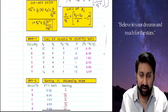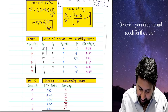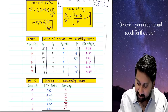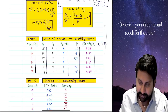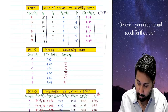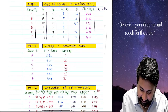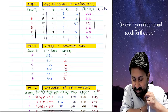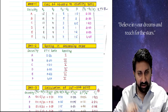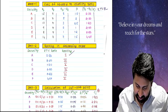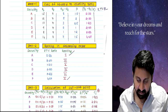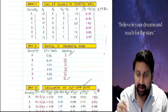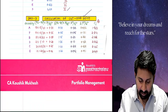Six securities are given with their returns and RF. You calculate the reward-to-volatility ratio as (Rs − Rf) / β. Arrange them in descending order — say A, B, C, D, E, F get rankings 1, 3, 5, 4, 6, 2. So first ranking goes to A, next to F, and so on. Once you put them in descending order, calculate the cutoff point.